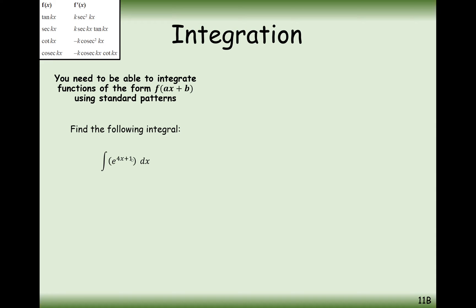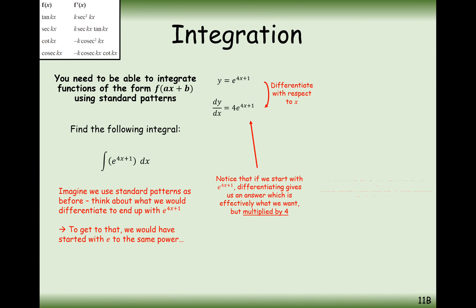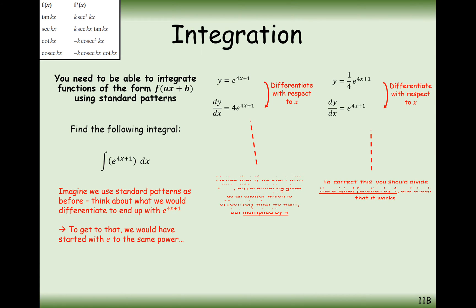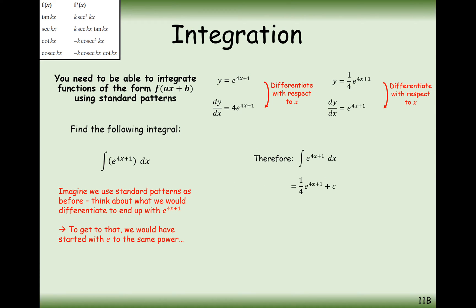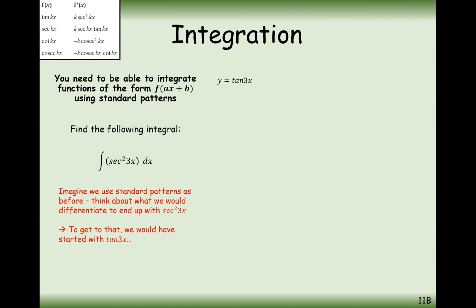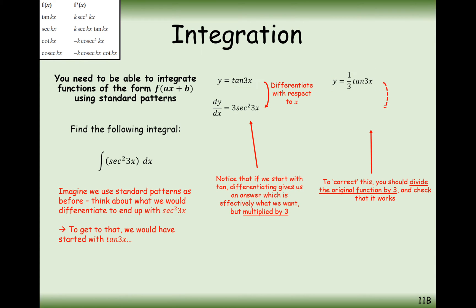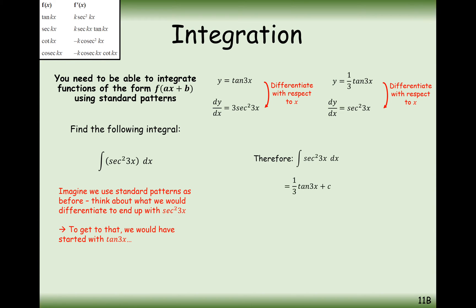The same applies with e to the 4x plus 1. The plus 1 is not really going to have any impact. So instead of multiplying by 4 like we would in differentiation, we're going to be dividing by 4 at the front — so it's going to be a quarter e to the 4x plus 1. For sec squared(3x), there is a 3 inside, so instead of multiplying by 3 to the front, we divide by 3. The answer is a third tan(3x) plus c.